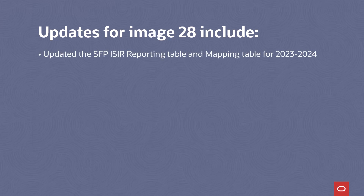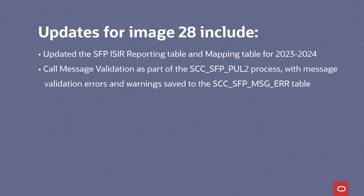To support the integration of SFP with Campus Solutions, we've delivered a number of updates. First, we provide support for the regulatory changes related to ISER processing for aid year 2324. To provide customers with a single source for SFP integration error messaging, we made updates to the process that handles the messages that Campus Solutions consumes from SFP. Message validation is now called as part of the PUL2 process, with message validation errors and warnings saved to a message error table. This update also provides logging improvements to provide progress updates as messages are being processed.